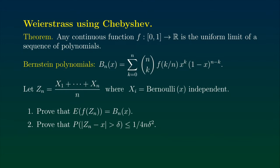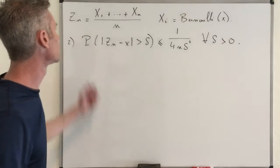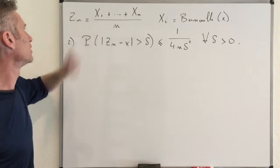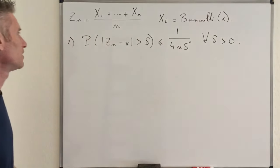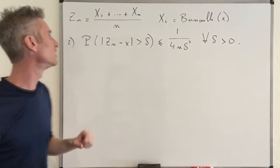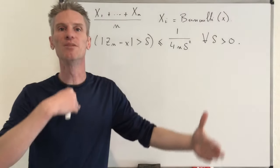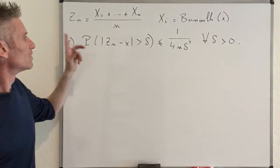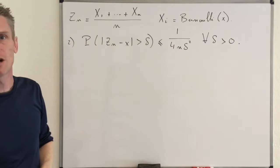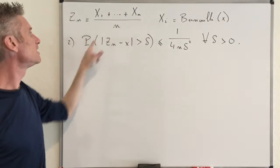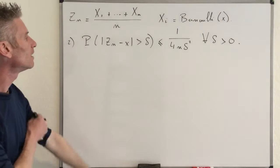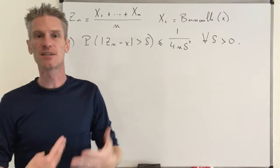Step 2: prove that the probability that |Zn - x| is larger than delta is less than or equal to 1 divided by 4n delta squared, for all delta strictly positive. That's where we use Chebyshev's inequality. Remember that Chebyshev's inequality tells you something about the probability that a random variable deviates from its mean by more than delta. The first step is to see that x is the expected value of Zn. To obtain a bound like this, we also need to know the variance of Zn.